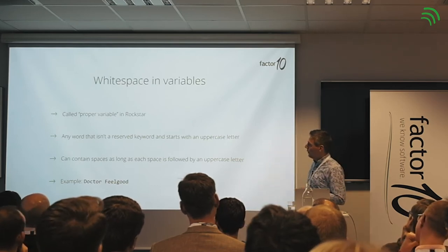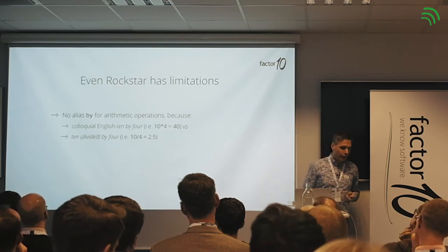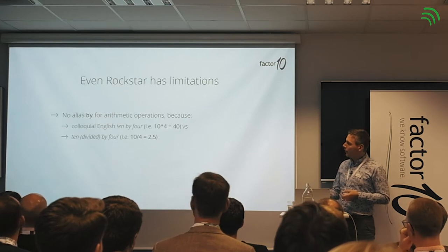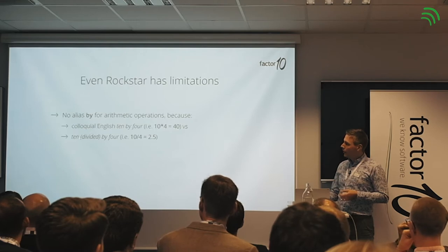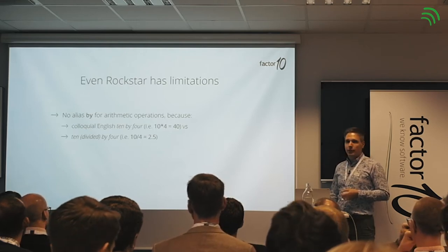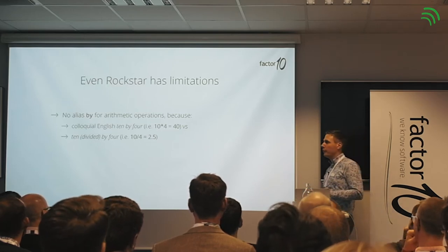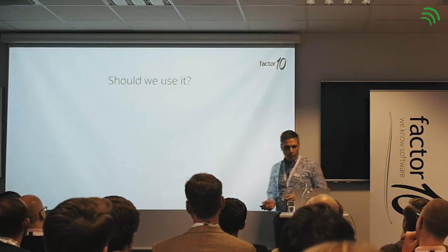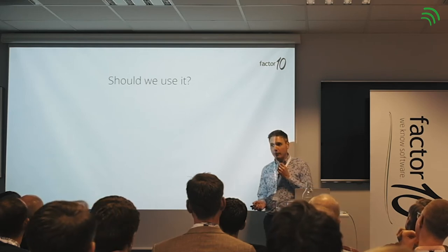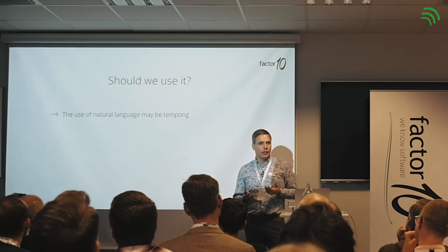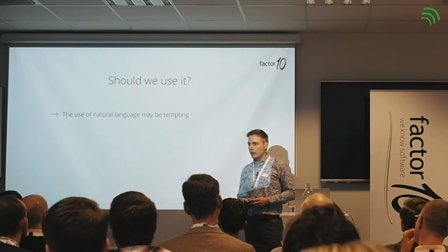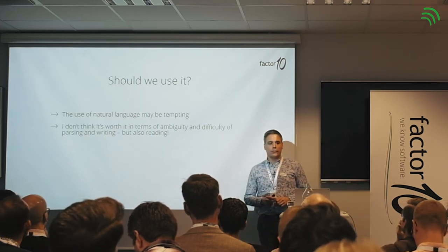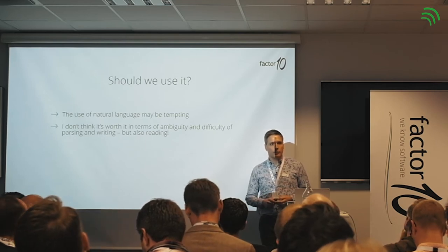Even Rockstar has limitations. For example, if you're going to do arithmetic operations — multiplying numbers — you might think you could say 'by'. But they disallow 'by' because it's really unclear: if we say '10 by 4', do we mean 10 times 4, or 10 divided by 4? Those give quite different results. So they decided that 'by' is not a good alias for arithmetic operations because it's ambiguous. Should we use natural language in our DSL? It may be tempting if you want to optimize for readability. But if we also want to think about the mental health of our DSL programmers, perhaps it's not a good idea — it becomes complicated due to all the ambiguity.